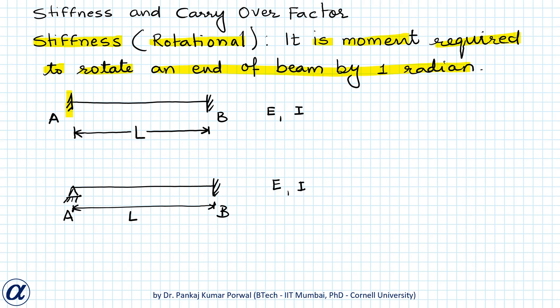The rotational stiffness at end A will be the moment MA that will produce unit rotation at A. If the angle is one radian, then MA equals KA, that is the rotational stiffness at end A for the beam AB.